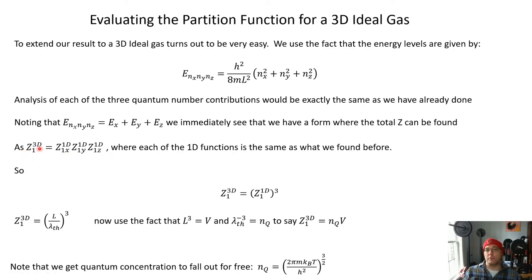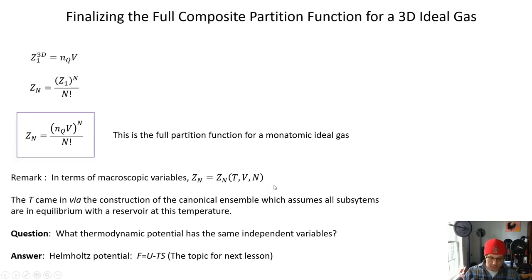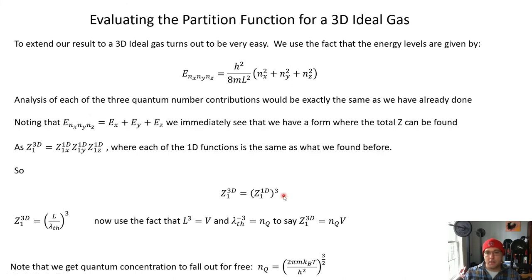So the single particle partition function in 3D is Z_x in 1d, Z_y in 1d times Z_z in 1d. And these are exactly the numbers we found before. So we can just say that the 3D partition function is the 1d partition function cubed. Sorry about that. I clicked too hard.